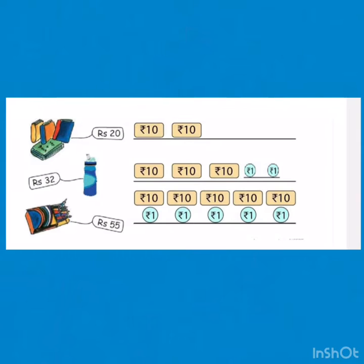Second, rupees 32 — draw 3 10 rupee notes and 2 1 rupee coins. Rupees 55 — 5 10 rupee notes and 5 1 rupee coins.